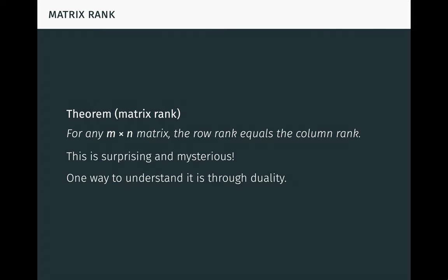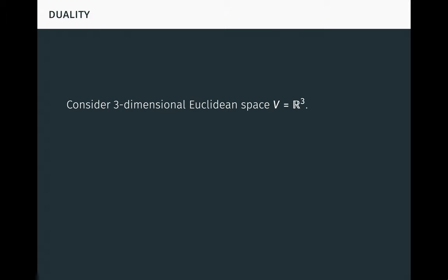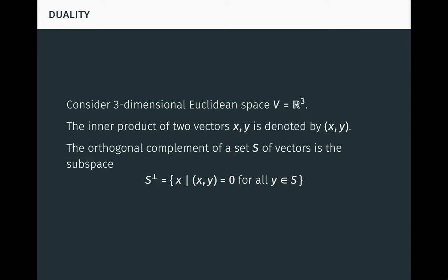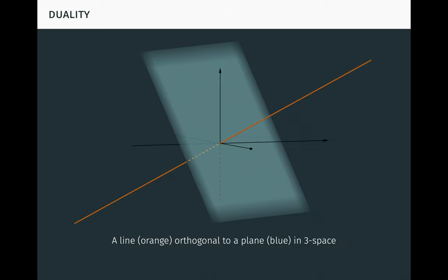One important way to understand the result is through duality. We'll start by looking at a simple example of duality. Consider three-dimensional Euclidean space R3. The inner product, or dot product, of two vectors x and y is denoted by parentheses. The orthogonal complement of a set S of vectors is the subspace S-complement, consisting of the vectors x such that x times y is equal to 0 for all vectors y in S. We can visualize this easily. Here, for example, the orange line is the orthogonal complement of the blue plane, and vice versa.